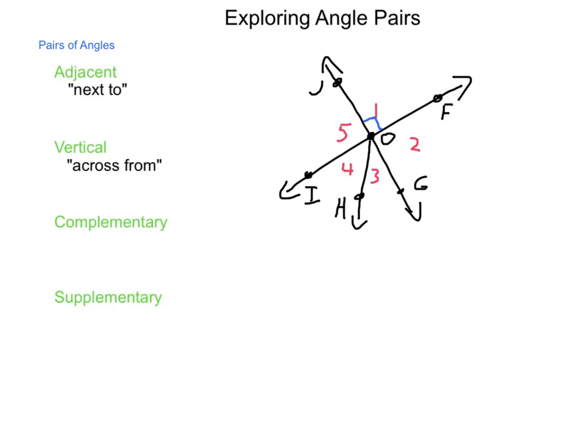Next is complementary. Complementary angles are those that add up to be 90 degrees. Since angle 1 is 90 degrees, angles 3 and 4 being an adjacent pair and vertical to angle 1, they would be complementary because they would add up to 90 degrees as well.